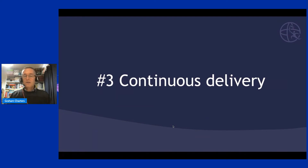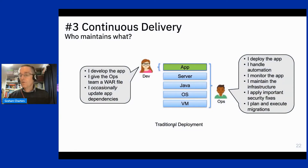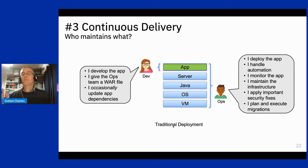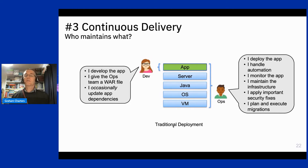Next: continuous delivery. When you shift from a traditional deployment approach, we very often see development teams and operations teams working separately. The development team develops the application, produces a war file, throws it over the wall to the ops team, and only occasionally makes updates. On the operational side, the ops team deploys the app, handles automation, monitors the app, maintains infrastructure for security, applies security fixes, and plans and executes migrations — which are actually a significant task.